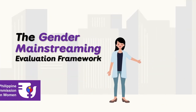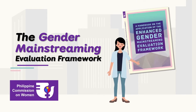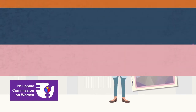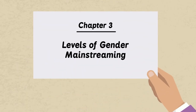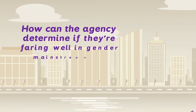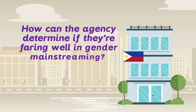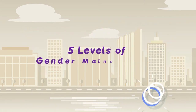The Gender Mainstreaming Evaluation Framework — Chapter 3: Levels of Gender Mainstreaming. How can the agency determine if they're faring well in gender mainstreaming?